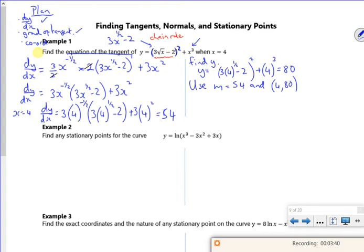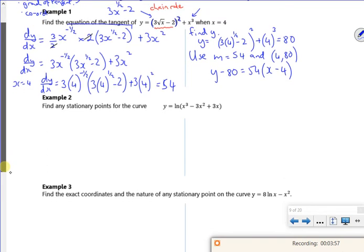And I'm going to put that in my y minus y1. If it was normal, I'd have to flip it and change the sign on the equation. So y minus 80 is 54, x minus 4. If they don't ask you, we'll leave it as it is. If not, then rearrange. That'll do us. So that's the tangent one.